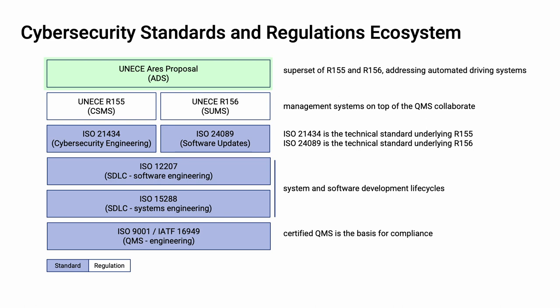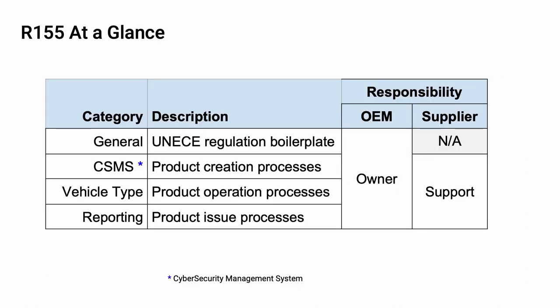Let's consider the general categories covered by UNECE R155. The first is general boilerplate material applied to all UNECE regulations. The second is the Cybersecurity Management System (CSMS), which deals with the product creation processes. The third, vehicle type, covers product operation processes. Fourth is reporting, which deals with product issue processes. It's important to note that R155 doesn't just focus on the OEM, although the OEM is primarily responsible for ensuring compliance. There's an expectation within R155 that the entire supply chain conforms to the regulation, regardless of the supplier's tier.